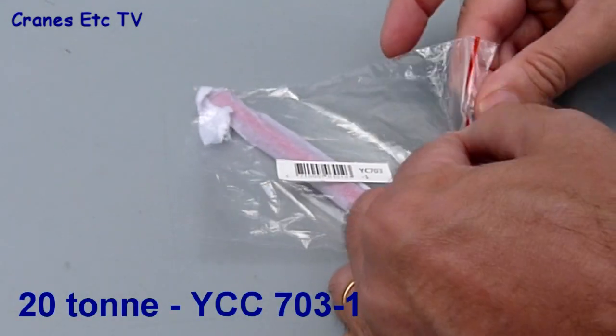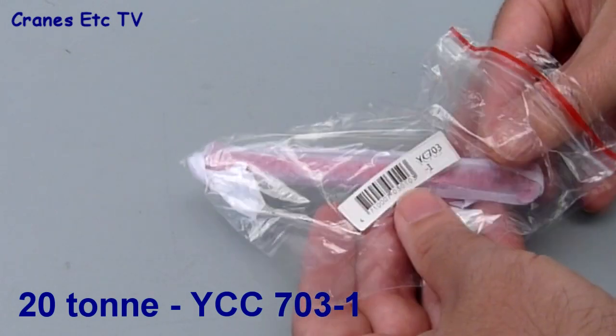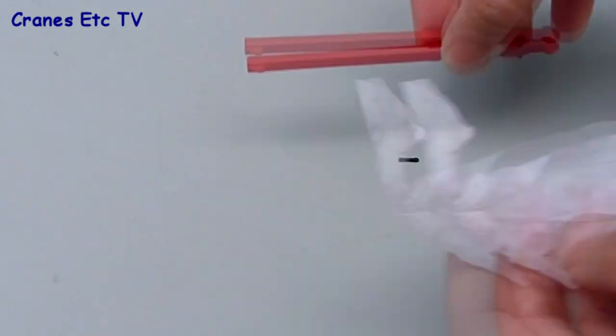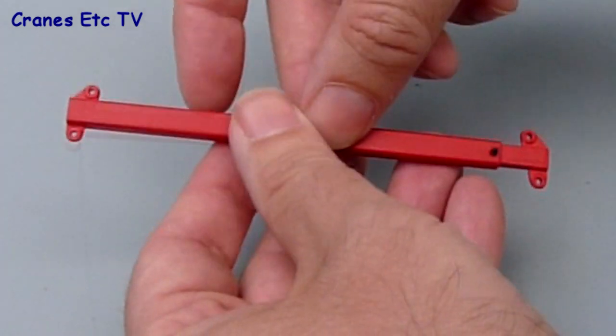Next up is the 20 ton beam and this is packaged the same way as the 40 ton beam. It also includes a spare black plastic pin because this is an adjustable lifting beam.